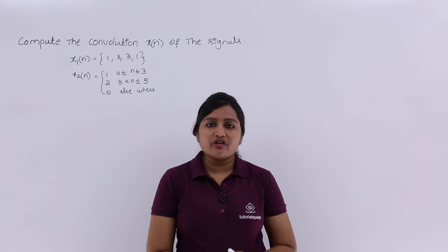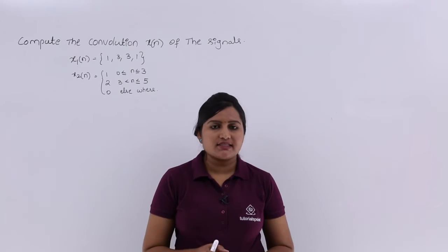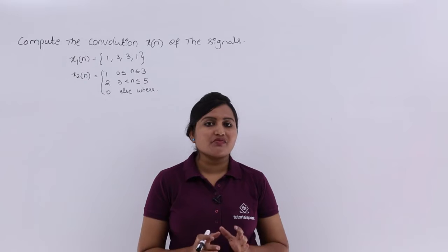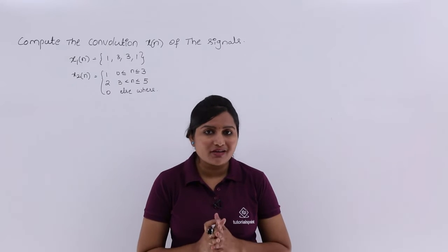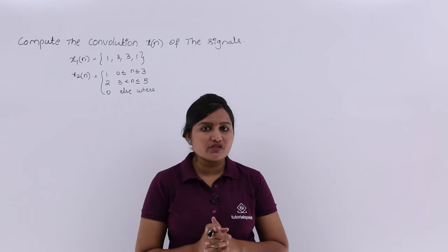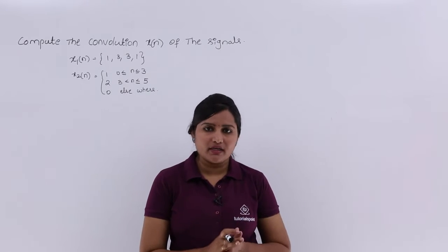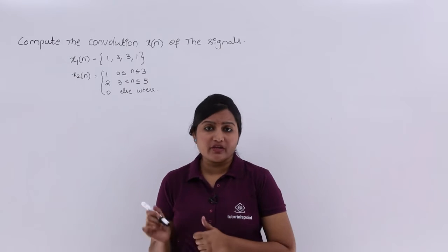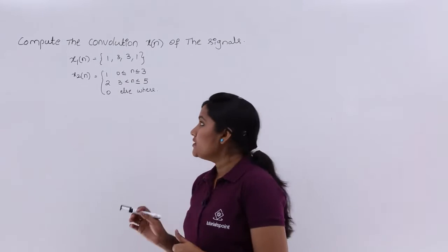In this video, we are going to convolute two discrete signals by using the Z transforms concept. That means, based on the convolution property of Z transforms, we are going to solve this problem.